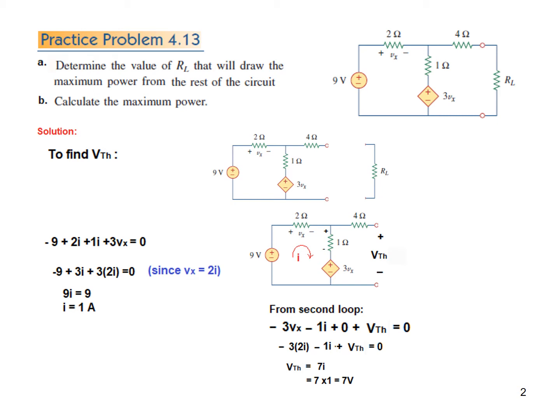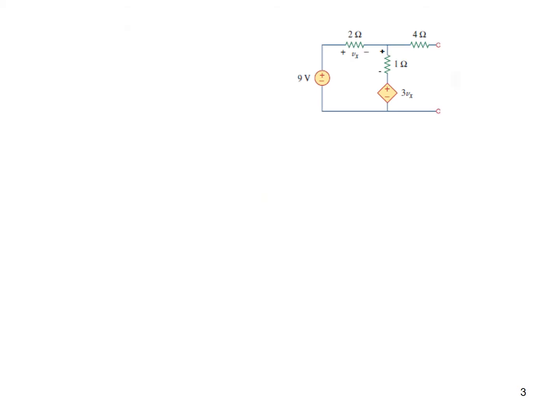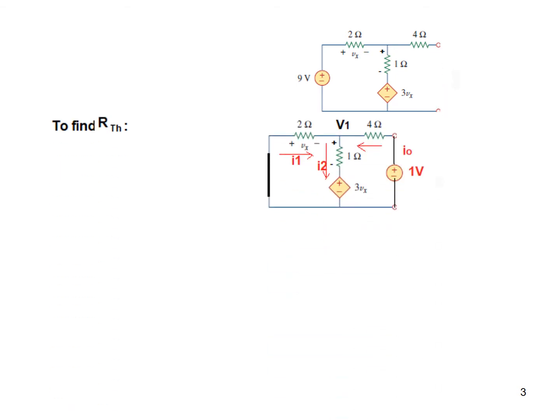Now we need to find Rthevenin. For circuits having a dependent source we use a different technique: we either connect a 1 ampere current source or a 1 volt voltage source at the terminals, or we short circuit. I will connect a 1 volt voltage source. I have marked the currents: i1, i2, and i0. To find Rthevenin, we need to find i0, since Rthevenin equals 1 volt divided by i0.